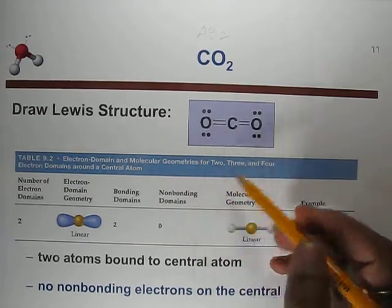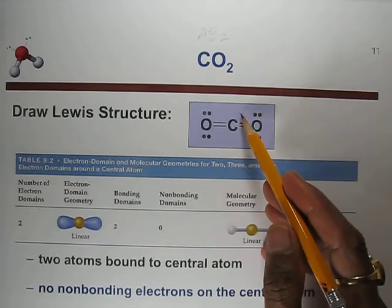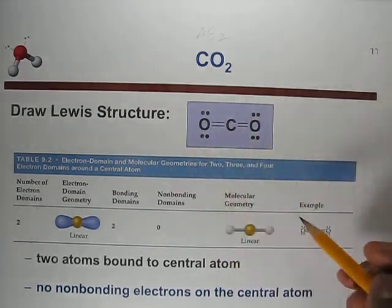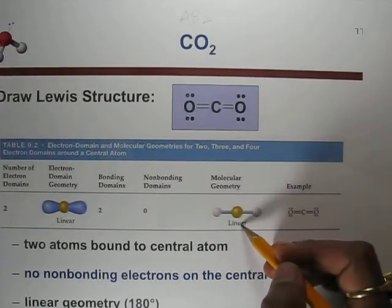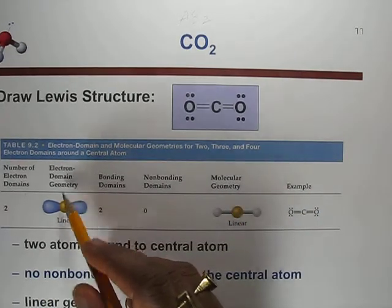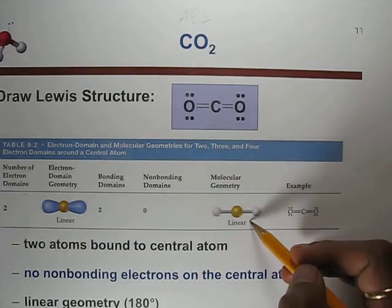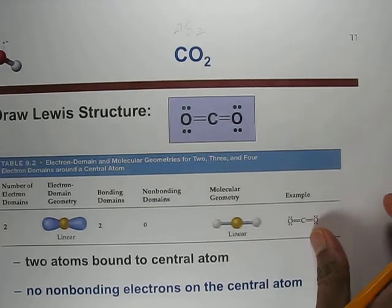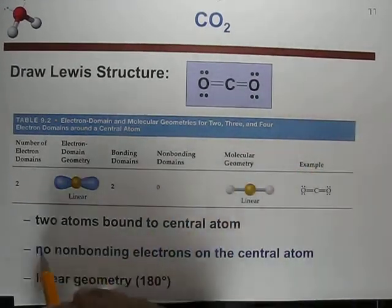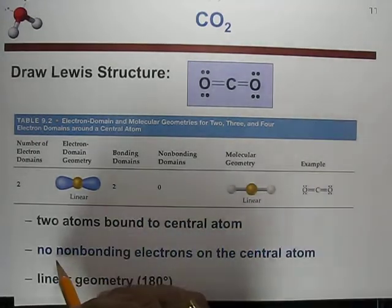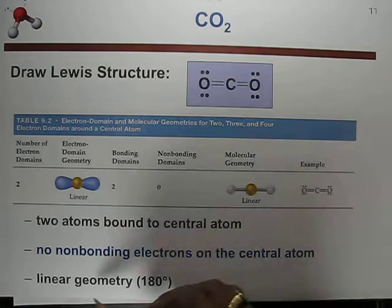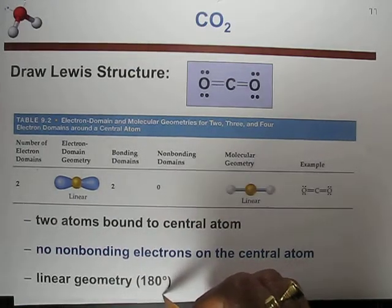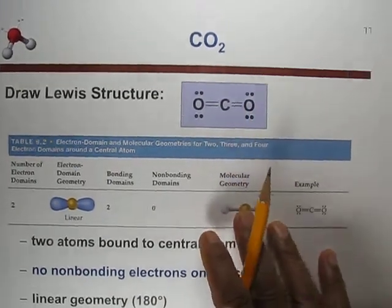When counting non-bonding electrons, we only consider those on the central atom, not on the surrounding atoms. For CO2, the central carbon has no non-bonding electrons, so the molecular geometry is also linear — the same as the electron domain geometry. The bond angle between the two oxygen atoms is 180 degrees.